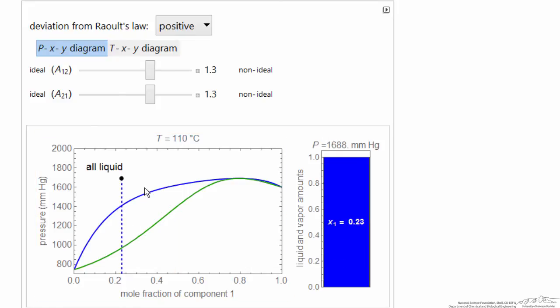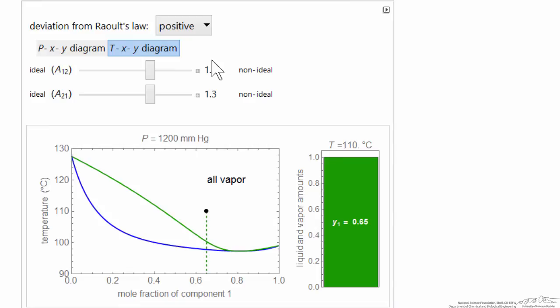If I move the dot up to high pressure, we have all liquid present. You can correspondingly look at a TXY diagram.